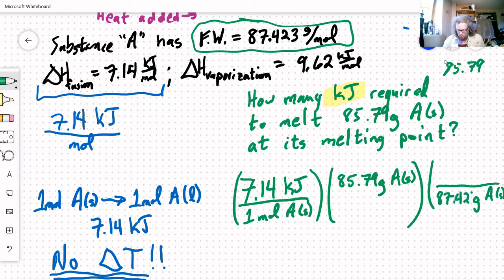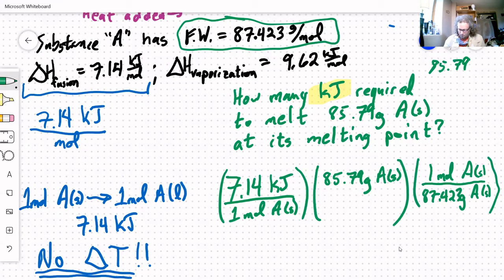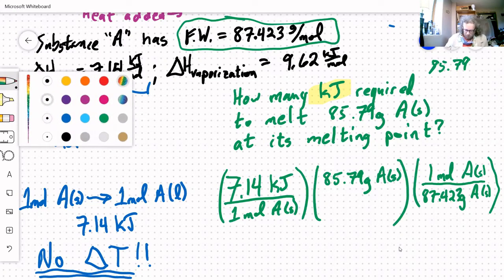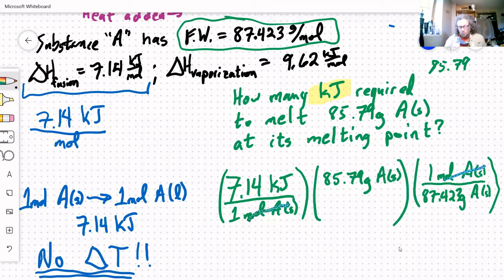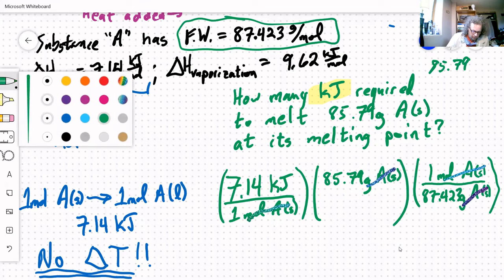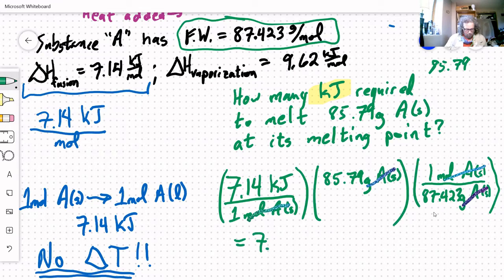87.423, and that's one mole of a solid. Let me nudge this over a little bit. Let's cross out some of those units. We've got moles of a, moles of a, those cancel out. I've got grams of a, grams of a, those cancel out. So I'm left with kilojoules as my only unit, which is what I'm looking for. So let me plug that one in quickly. 7.14 times 85.79 divided by 87.423. That is 7.0066298 kilojoules.